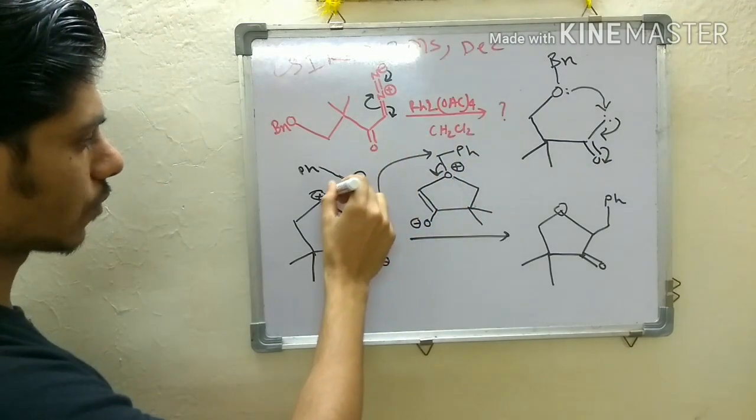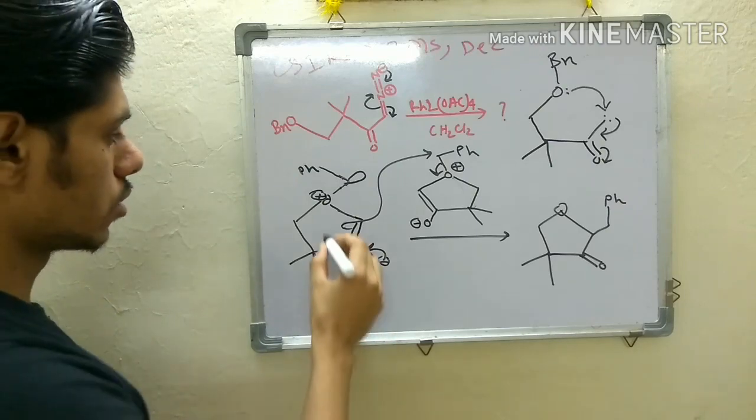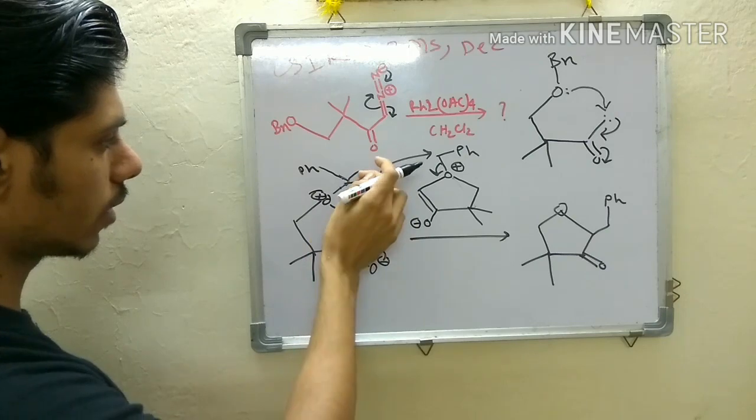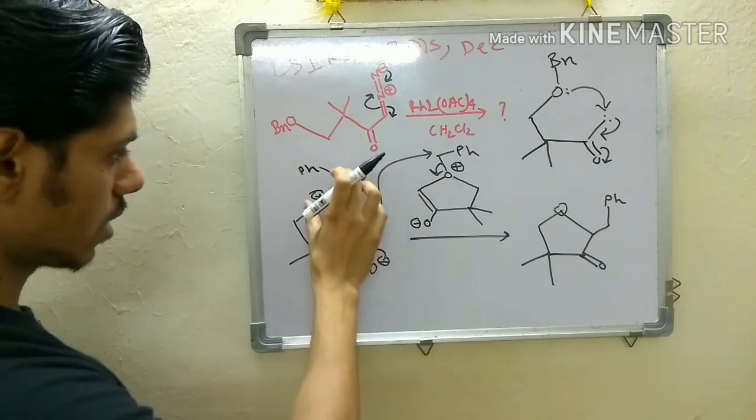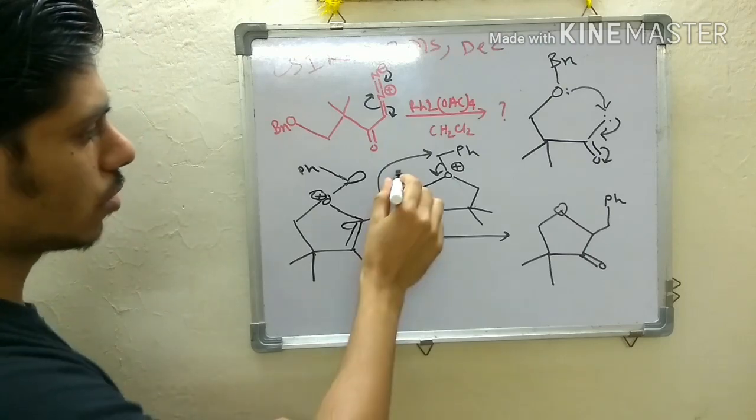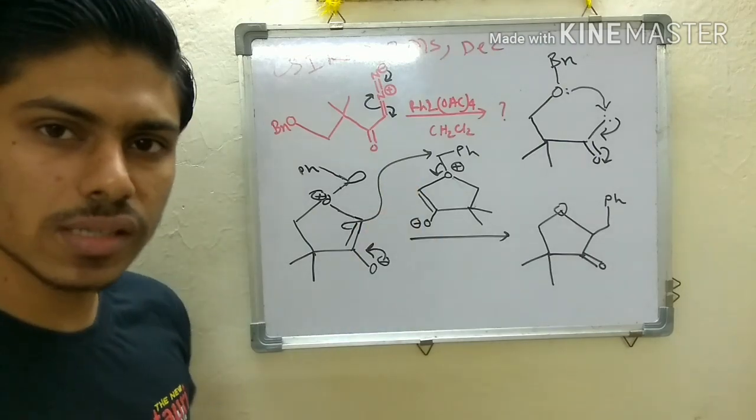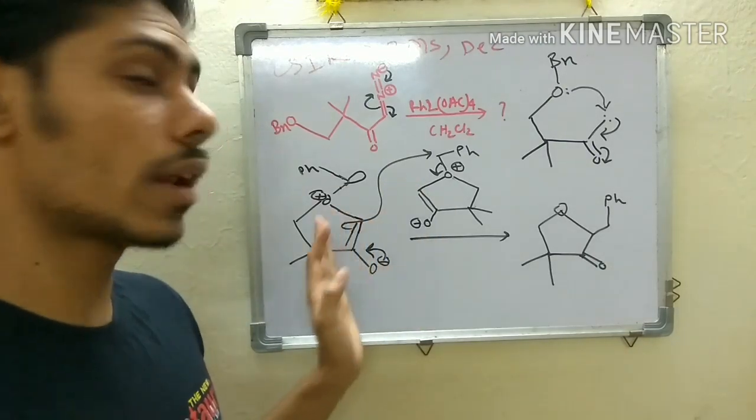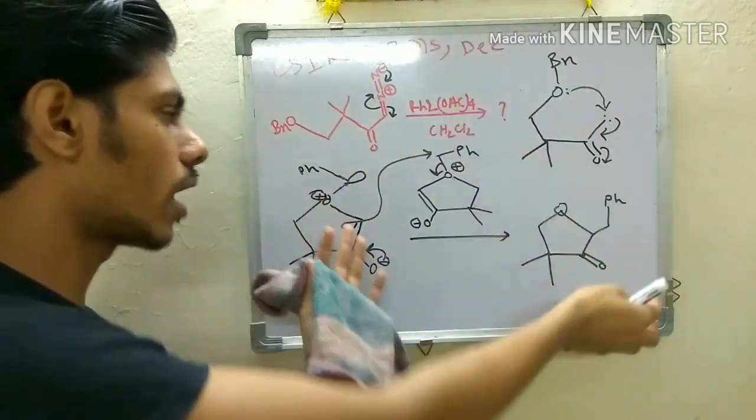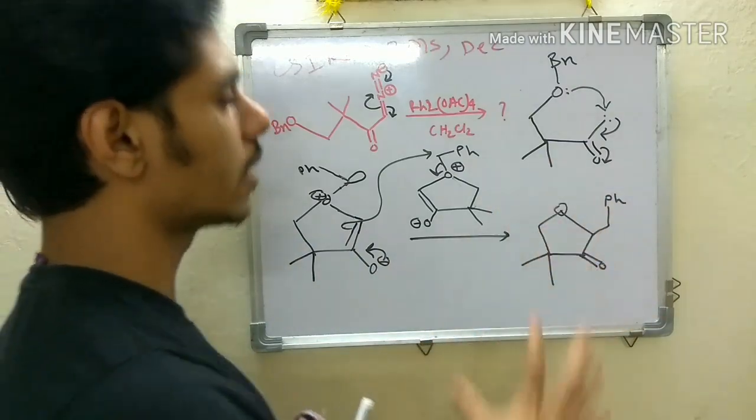Because it is SN2 attack on the sigma star orbital and it has to reach on the back side of the O-C bond. So I think it is difficult here to approach on that sigma star orbital because the bond angle is not suitable. So it may be that the reaction is actually intermolecular and not intramolecular.